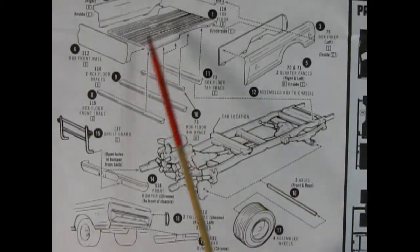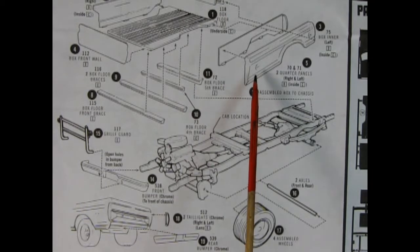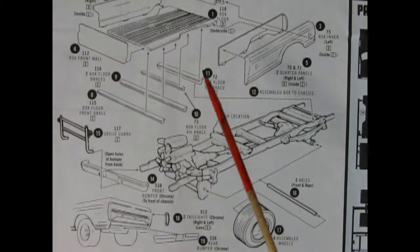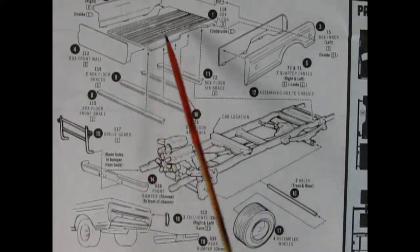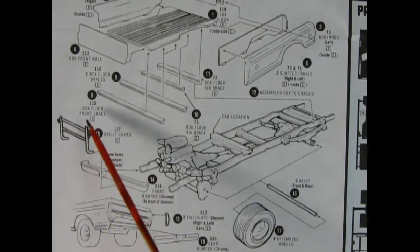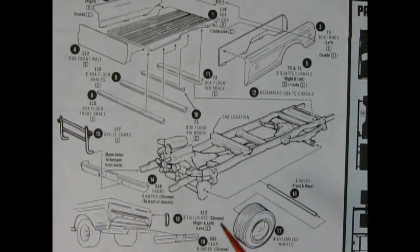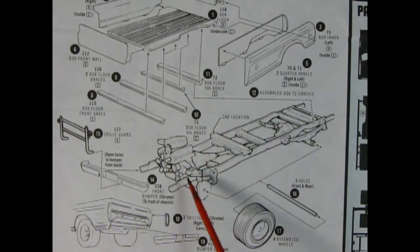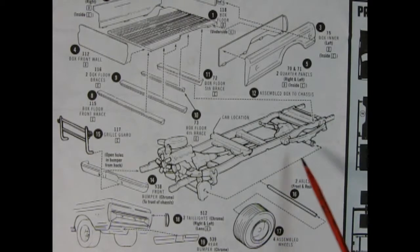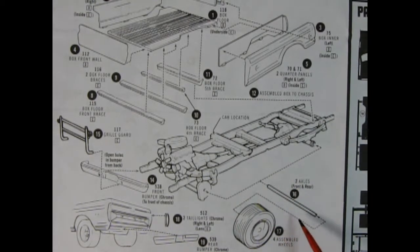There's our pickup bed going together and as you can see it is multi-piece with outer and inner panels and then we have all these braces underneath as well as the overrider grille guard, our front bumper, rear taillights, rear bumper going in. All of this drops down onto our frame and then our wheels and axles go through the holes with this metal bar.